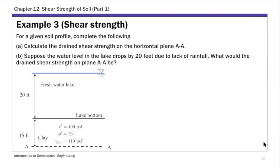So what's left is one example here. This is Example 3. In this example, we're going to make use of the Mohr-Coulomb failure criterion — specifically the effective stress version. This is to predict the shear stress at failure, or to predict the shear strength on any given plane.